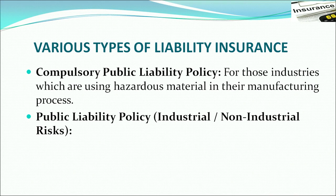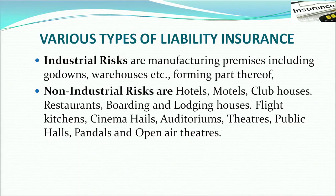The second category is the public liability policy for industrial or non-industrial risks. Industrial risks cover manufacturing premises including godowns or warehouses. Non-industrial risks relate to infrastructures like hotels, motels, club houses, restaurants, boarding and lodging houses, flight kitchens, cinema halls, auditoriums, theatres, public halls, and pandals.